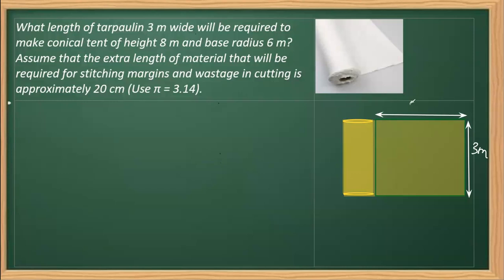We know that area of a rectangle is, as you can see, it's a rectangular piece of paper, length multiplied by breadth. So we have to get the length and we know the breadth, which means we need to find the area. As you can see from the question, the tent is conical in shape.